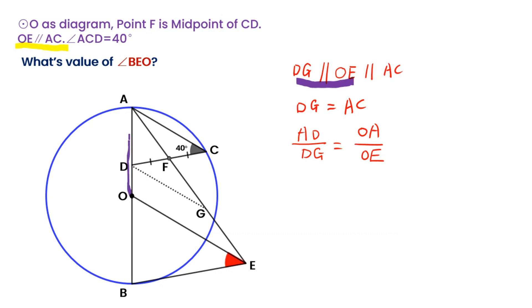OA and OB are both radii of the circle, so OA equals OB. We can replace DG with AC in the equation, and replace OA with OB. The new equation is: AD over AC equals OB over OE.